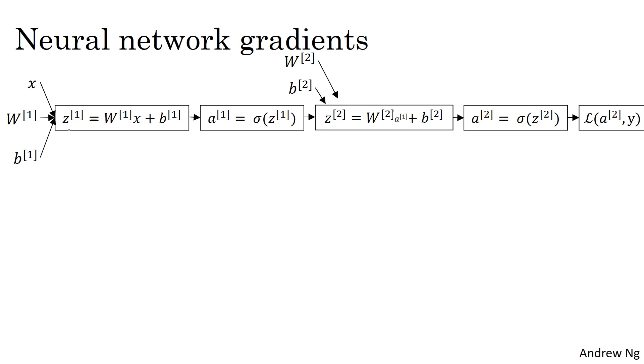First, you compute z1 using this equation, and then compute a1. Then you compute z2, and notice z2 also depends on the parameters w2 and b2. Based on z2, you compute a2, and then finally that gives you the loss.